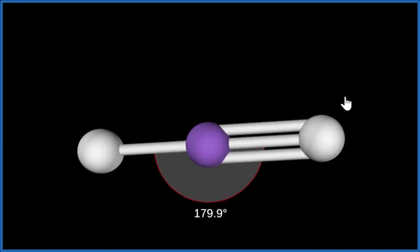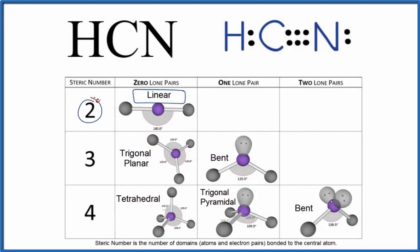Let's go back to our Lewis structure. So with that steric number of two and no lone pairs, we have that linear molecular geometry.